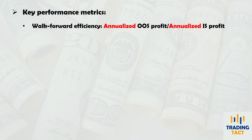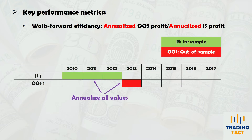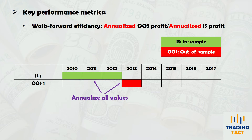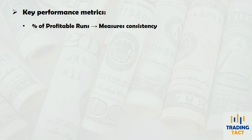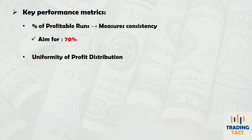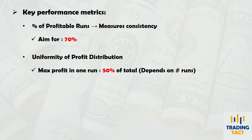Before running any test, we have to establish what to look out for. The walk-forward efficiency is the ratio of the annualized out-of-sample profit over the annualized in-sample profit. Annualized values are necessary since the lengths of your in-sample and out-of-sample periods will likely be different. An efficiency of 100% means the out-of-sample results are as good as the in-sample results. Some performance deterioration should be expected, and a minimum efficiency of 50% is often used as a passing criterion. The percentage of profitable runs is a measure of your strategy's consistency — 70% is a good benchmark. Lastly, you want a uniform profit distribution, meaning each optimization run contributes roughly the same amount to overall profits. If any run has an abnormally large contribution, it could be due to an unlikely price shock or market event. Depending on the number of runs, 30–50% of total profit should be a good upper limit.